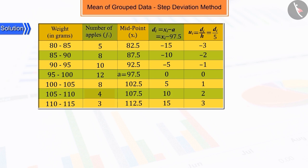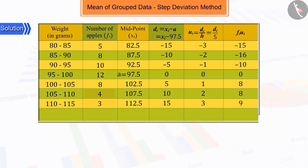To find the mean, multiply each ui by fi and find the sum of their products and the sum of the frequencies fi.